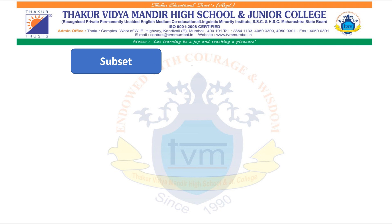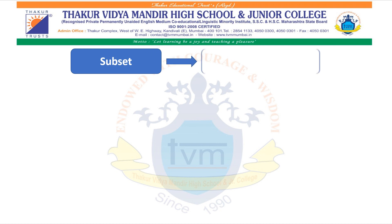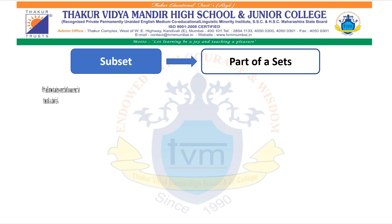Subset. What is a subset? Part of a set is called a subset. If A and B are two sets and every element of set B is also an element of set A, then set B is a subset of set A. Symbolically, it can be written as B ⊆ A.